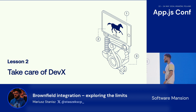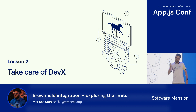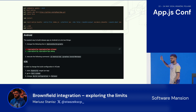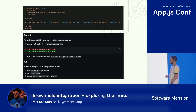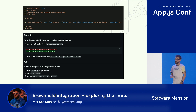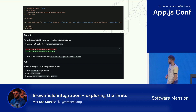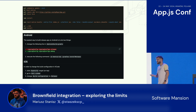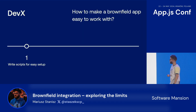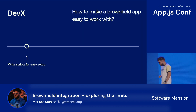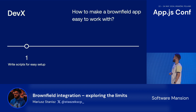Lesson number two: take care of the developer experience. The first set of instructions I wrote for people who wanted to run the brownfield app involved quite a lot of things — Git submodule setup, bundling React Native manually — and you could run it only in release configuration. That was not the best dev experience for people who just wanted to start working with the app.